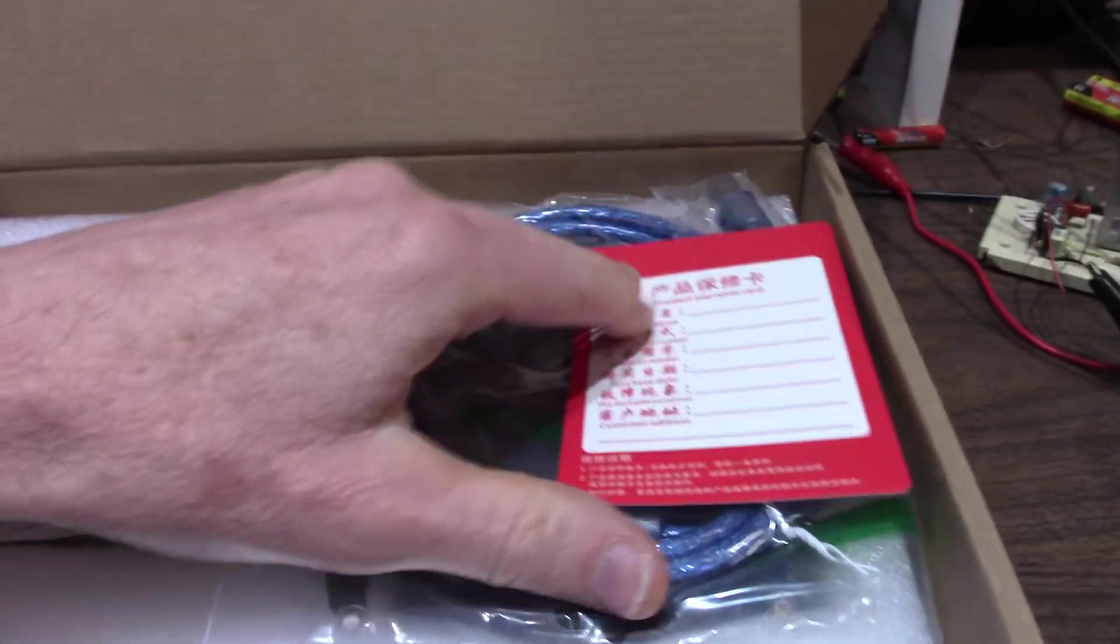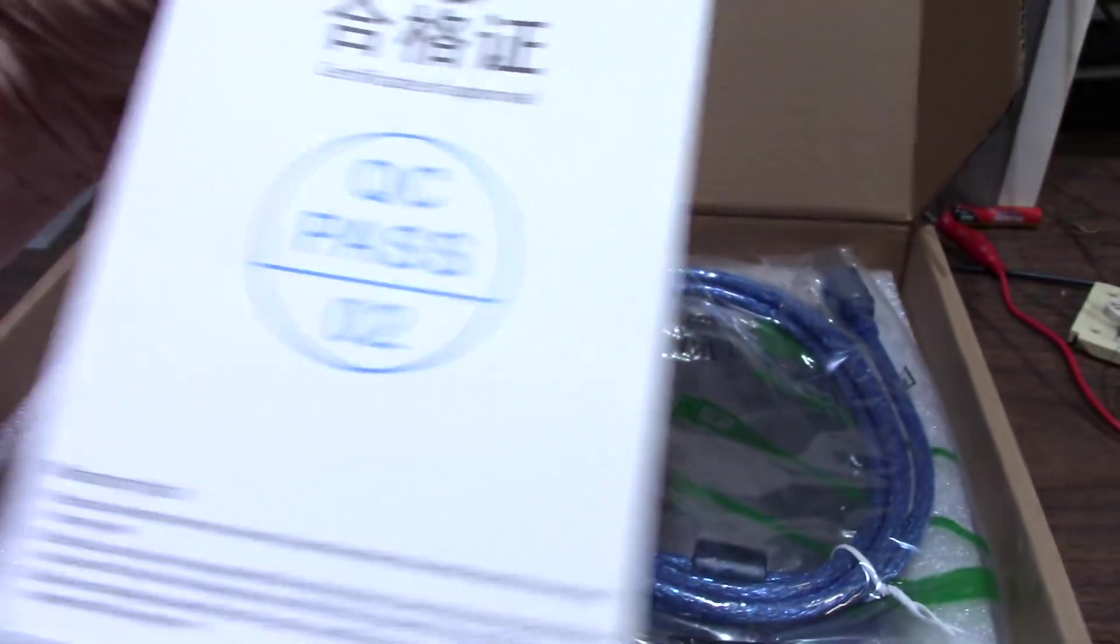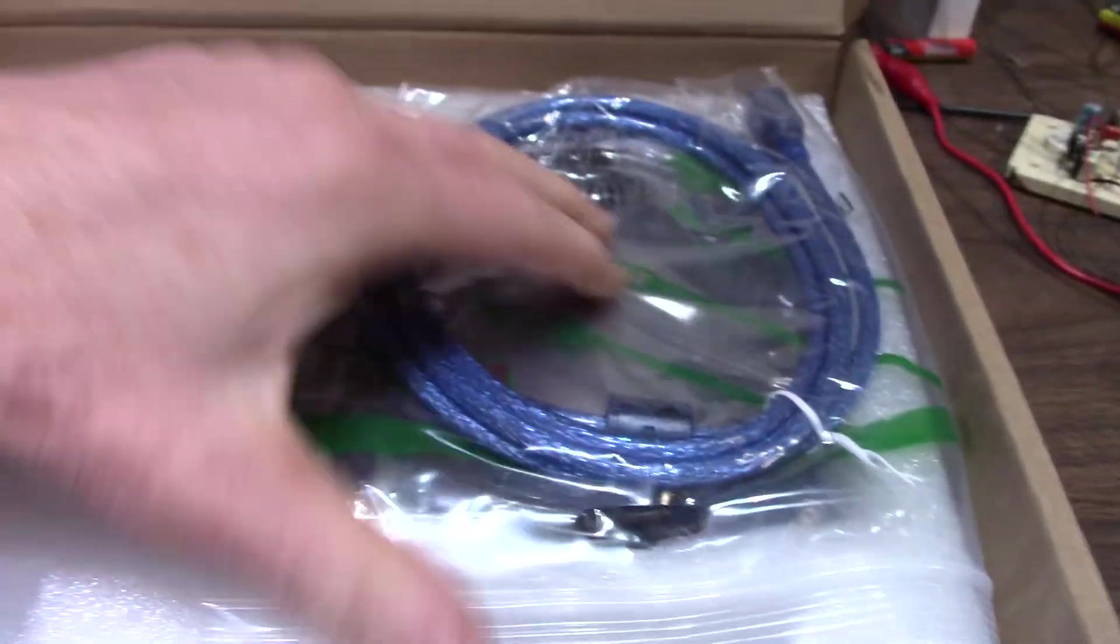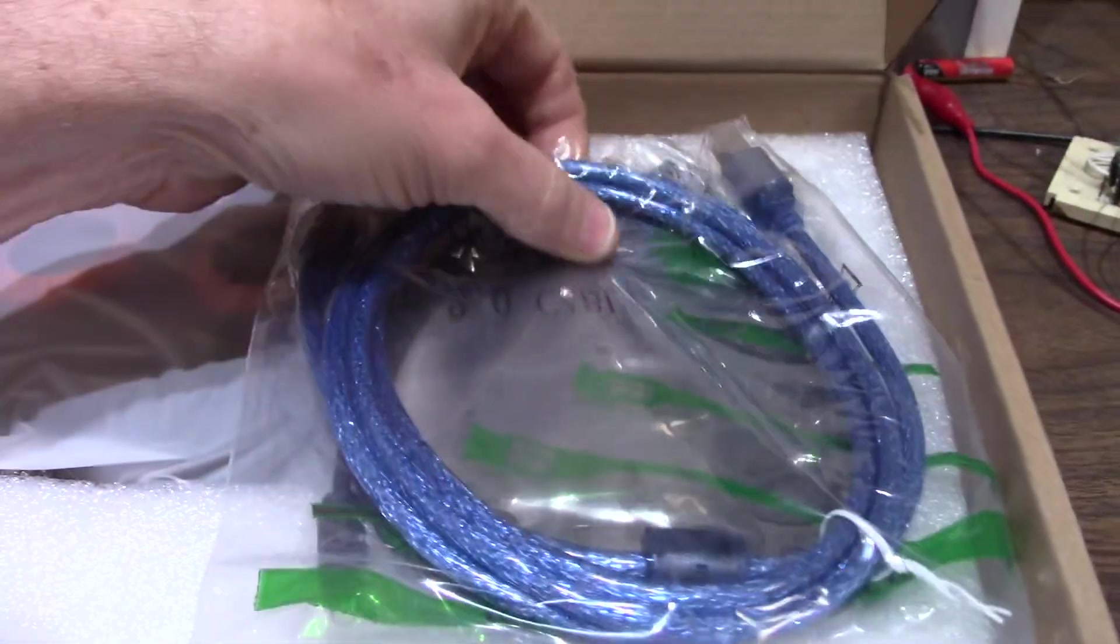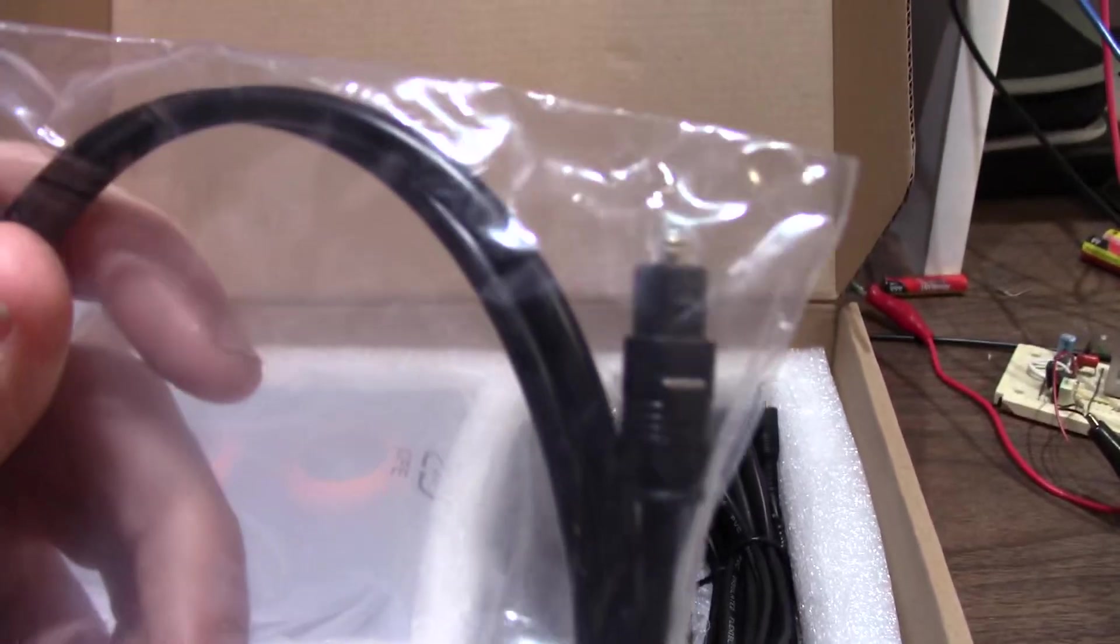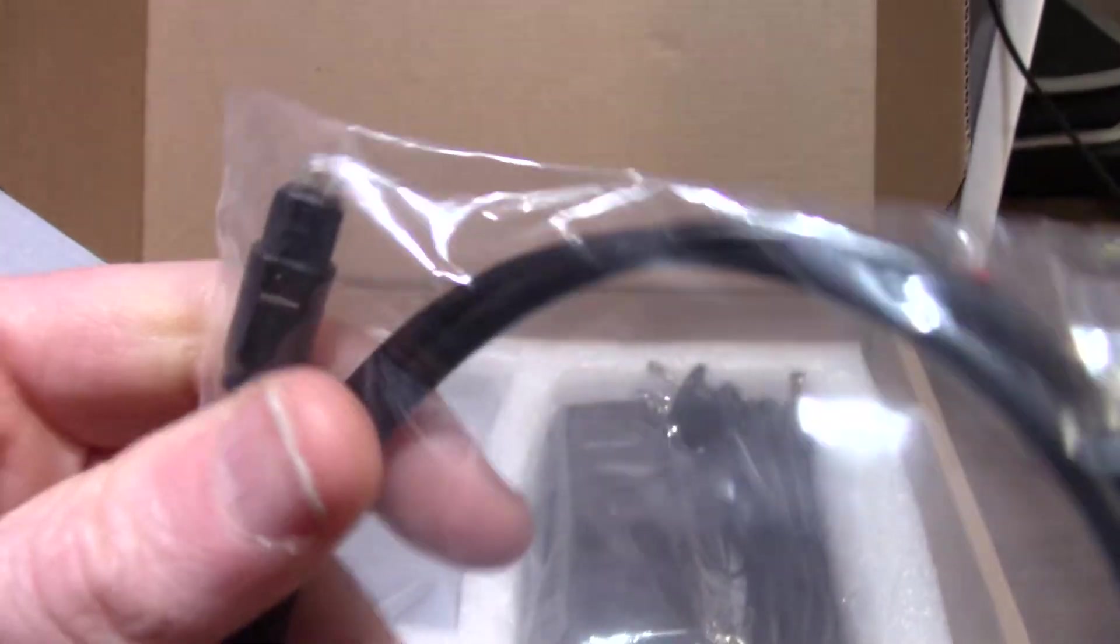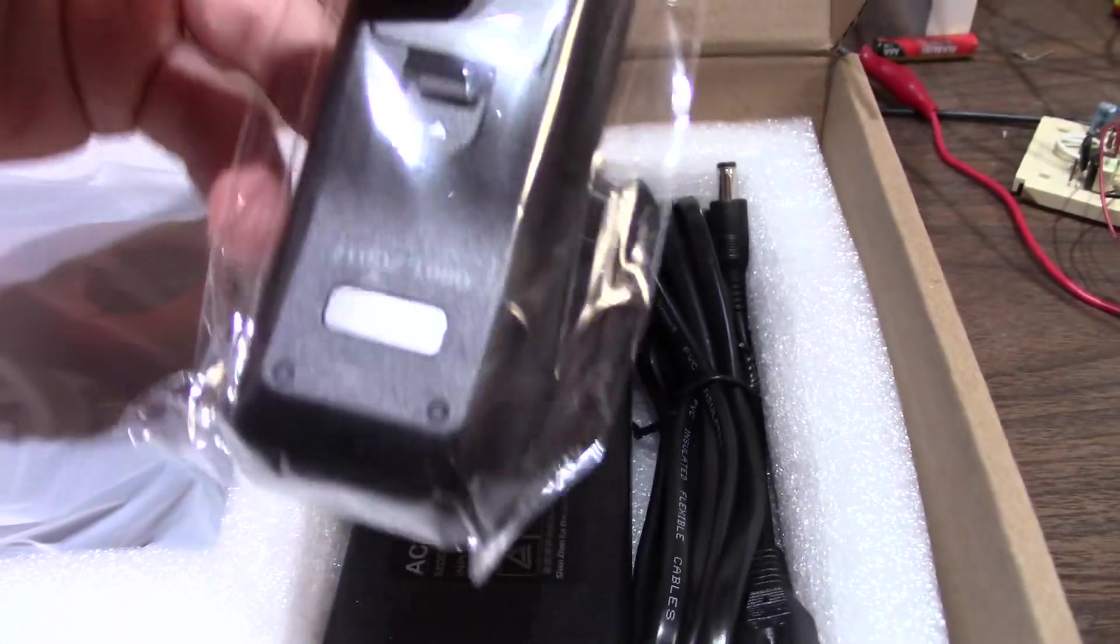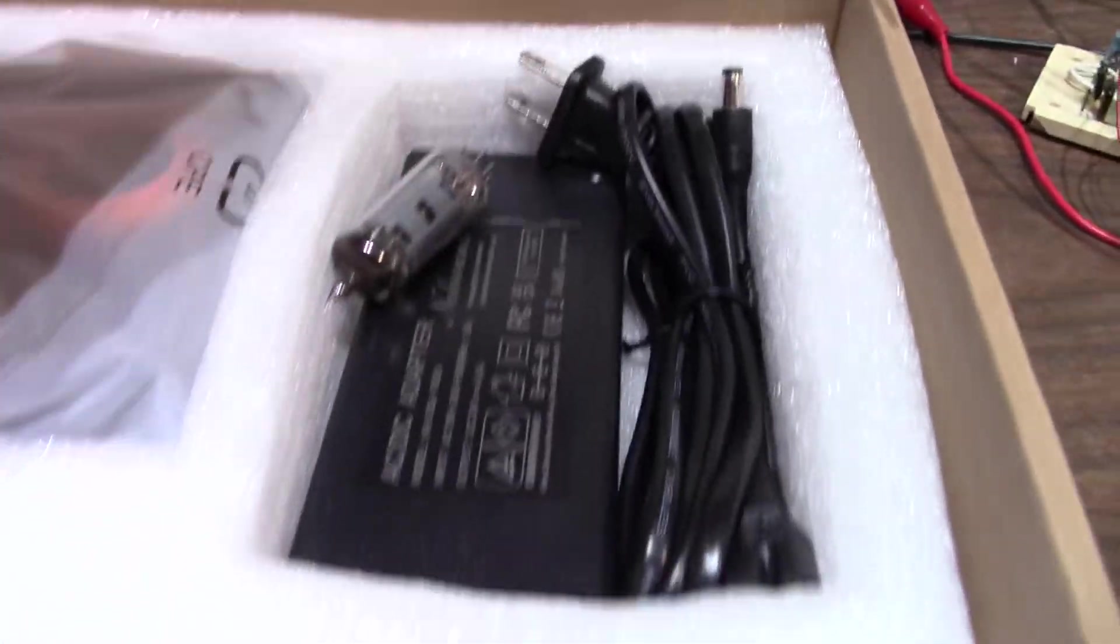An owner's manual. Ooh, past QC. That's good. And we have some cables. Some USB thingy. Looks like one of those optical fiber thingies.